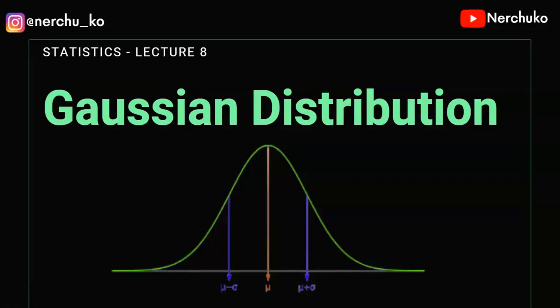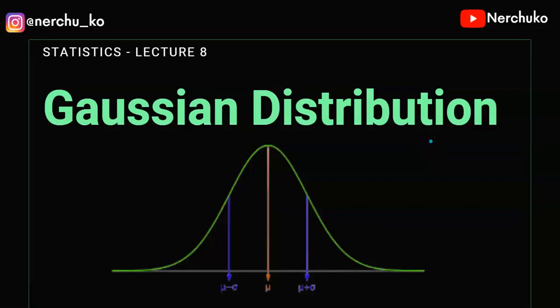In this video, we will talk about Gaussian distribution. Gaussian distribution is a normal distribution. This is one of the important topics in statistics. Most machine learning algorithms apply to data, and Gaussian distribution can be satisfied with machine learning models. The predictions can be satisfied with performance and accuracy.